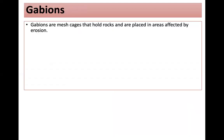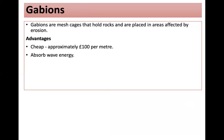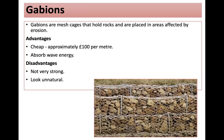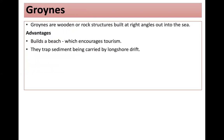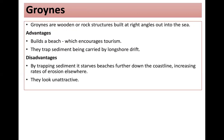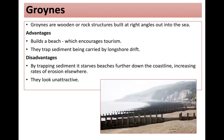Gabions are mesh cages holding rocks placed in areas affected by erosion. They're cheap at around £100 per metre and absorb wave energy, but they're not very strong and look unnatural. Groynes are wooden or rock structures built at right angles out into the sea. The advantages are they build a beach, encouraging tourism, and trap sediment carried by longshore drift. The disadvantage is that by trapping sediment, they starve beaches further down the coastline, increasing rates of erosion elsewhere.